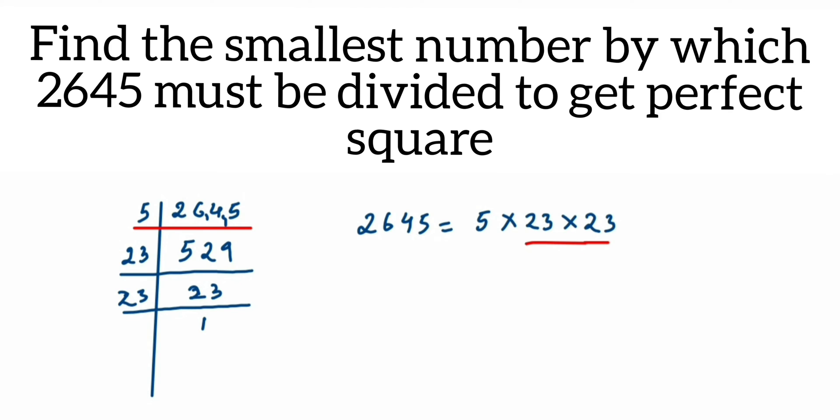If I want to divide, I want to divide with 5, because if I remove this 5 then this number can become a perfect square. Divide on both sides with 5. On right hand side it gets cancelled, on left hand side we have to divide the number with 5.